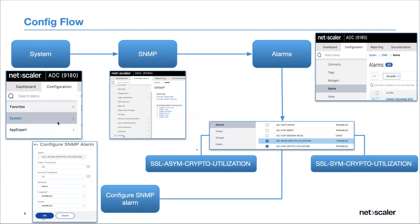You click into the alarms and edit them, where you configure the SNMP alarm with various parameters - the alarm threshold at which it triggers, and the normal threshold as a baseline so when crypto utilization returns to baseline it triggers the alarm again, showing you the range from highest threshold back to baseline. Just enable them and click OK. This feature is only for Intel Coleto and Lewisburg platforms - essentially all MPXs and SDXs which have the Intel Coleto or Lewisburg chipset.